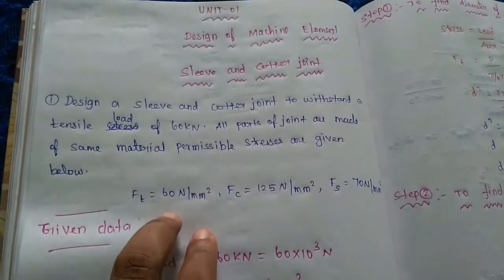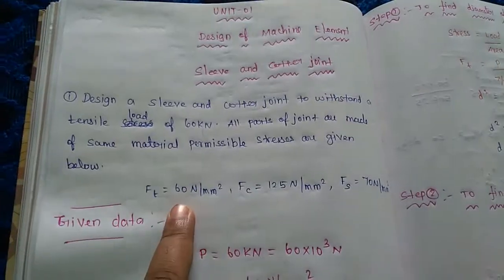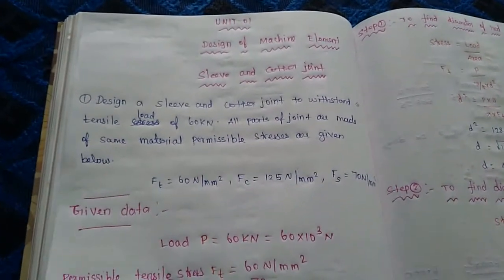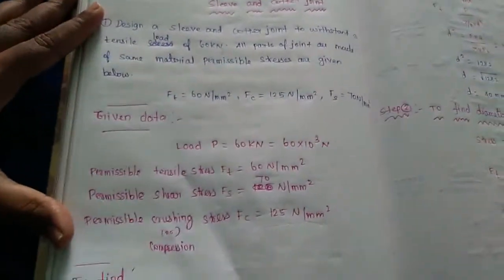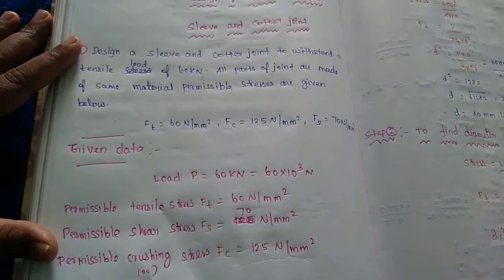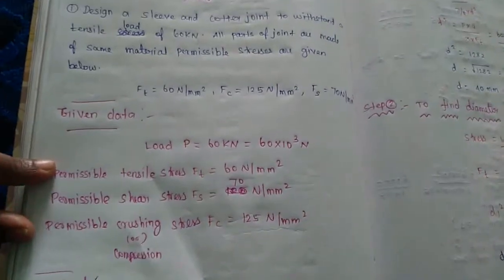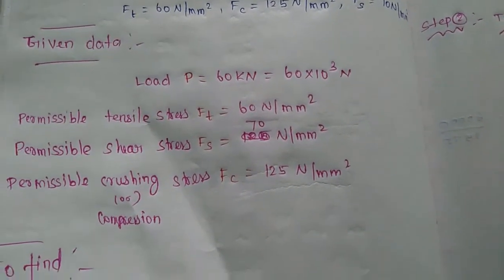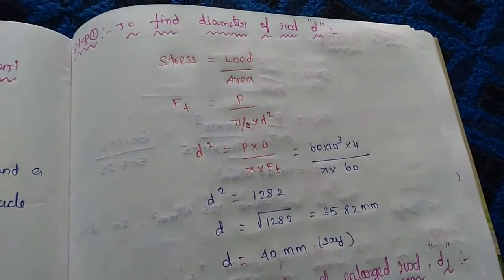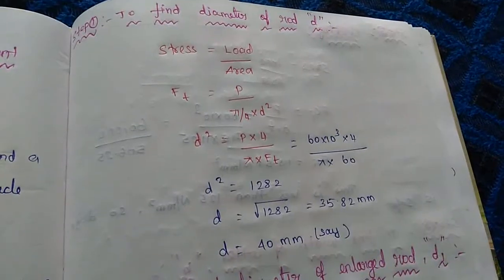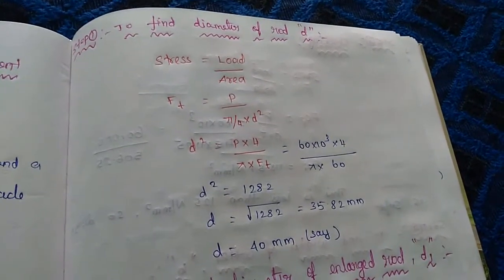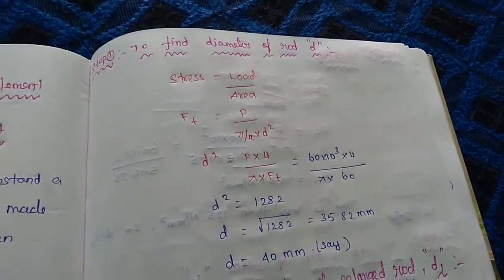So the given data is: tensile stress Ft = 60 N/mm², compressive stress Fc = 125 N/mm², shear stress Fs = 70 N/mm². Now, the first step is: stress = load / area. Here, stress is F, load is P, area is A. The variables will change between Ft, Fc, and Fs depending on the case.